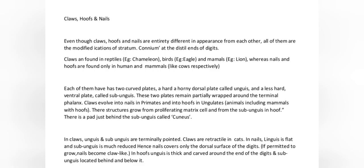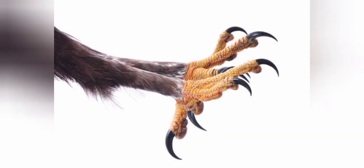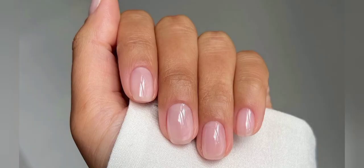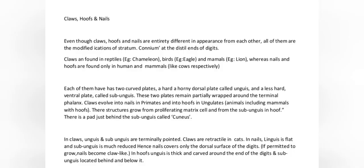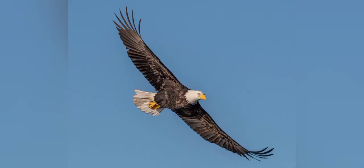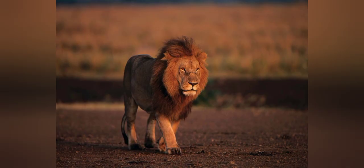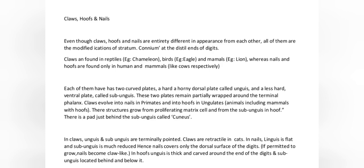Claws, hooves and nails. Even though claws, hooves and nails are entirely different in appearance from each other, all of them are the modifications of stratum corneum at the distal ends of digits. Claws are found in reptiles, e.g. chameleon, birds, e.g. eagle, and mammals, e.g. lion, whereas nails and hooves are found only in humans and mammals like cows respectively.